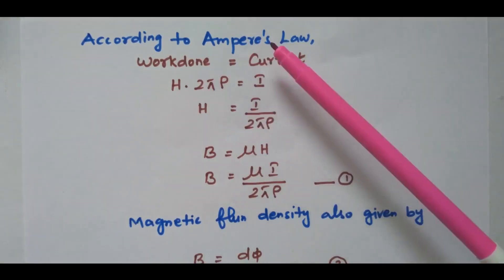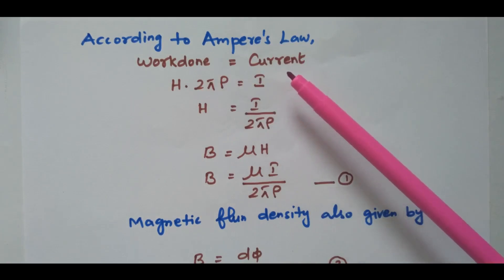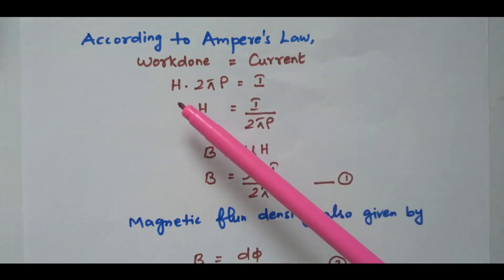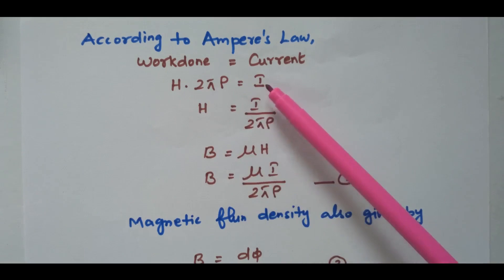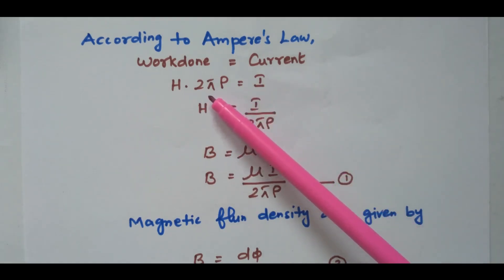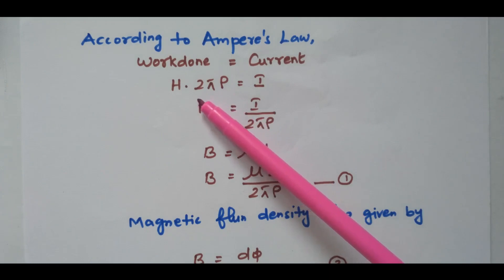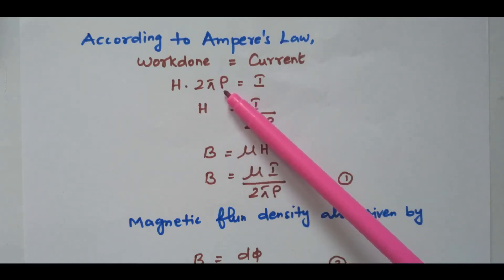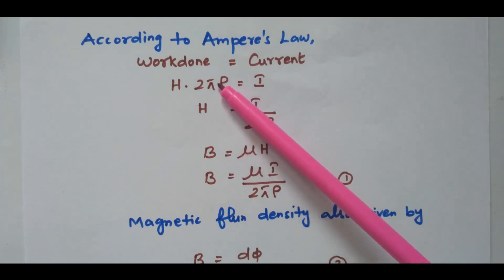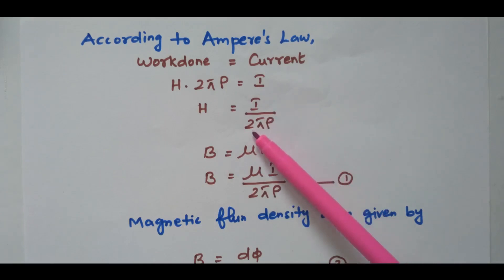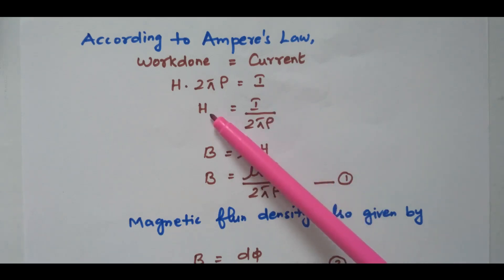Based on Ampere's law: ∮H·dL = I. In this derivation, H·2πρ = I. Here 2πρ is the circumference of that cylinder — the closed loop. We consider radius ρ, and inner and outer radii are A and B. From that, H = I / (2πρ). This is the magnetic field intensity.